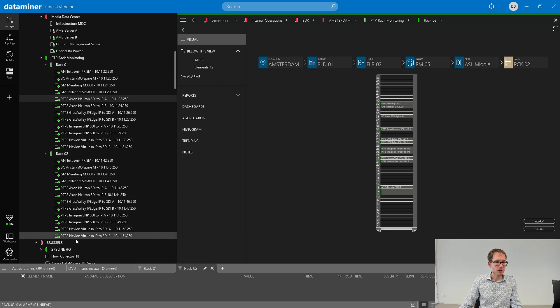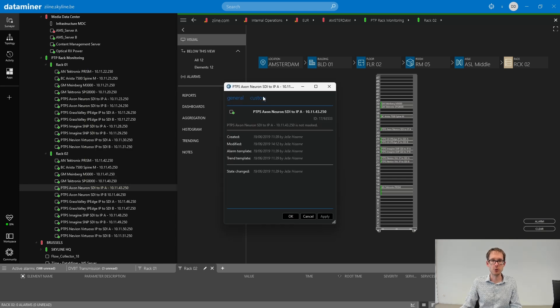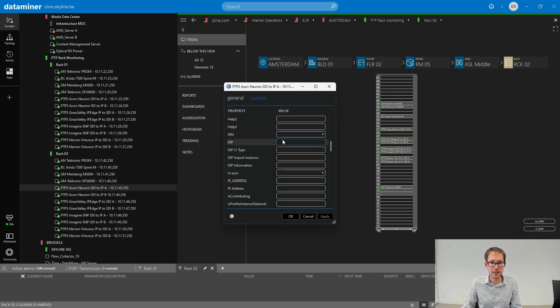Now the second rack, we have not done any location configurations. As you can see, the IDP is switched off and no location properties are specified.